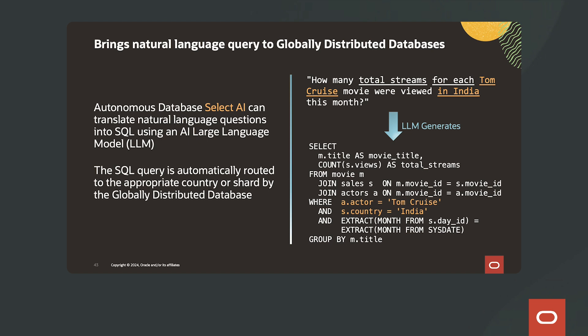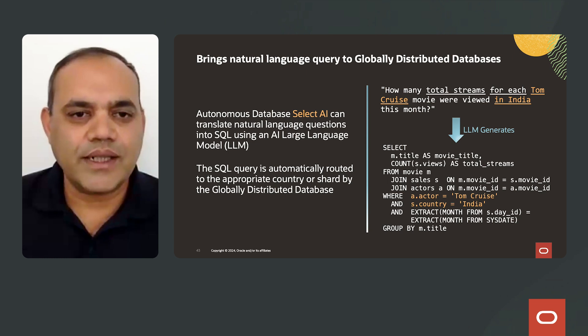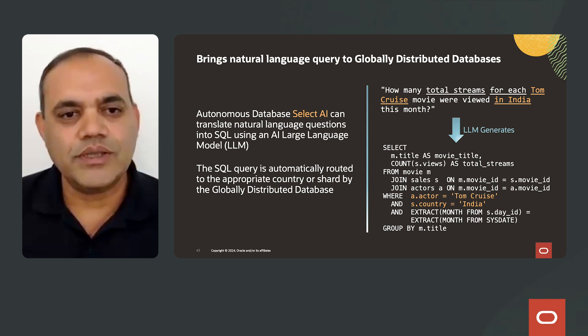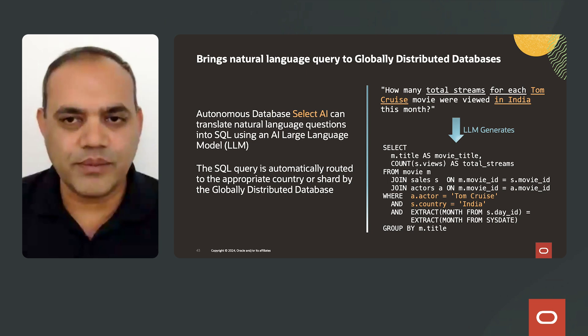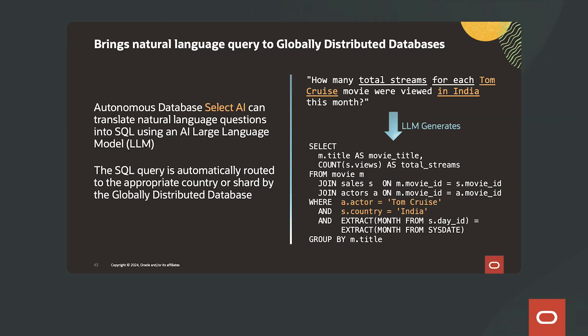Oracle brings natural language query to the globally distributed database using Autonomous Database Select AI, which can translate natural language questions into SQL using an AI large language model. The SQL query is automatically routed to the appropriate country or shard by the globally distributed database. For example, asking 'How many total streams for each Tom Cruise movie were viewed in India this month?' — the large language model generates SQL with country code as India, and Oracle's globally distributed database routes this query only to the shard in India.